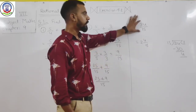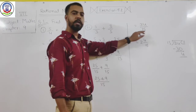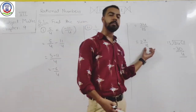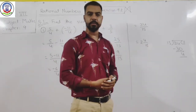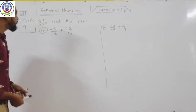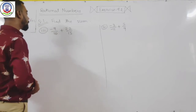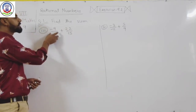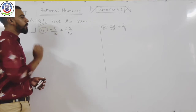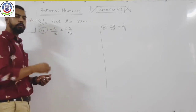34 upon 15 is also a correct answer. But whenever your numerator is larger than the denominator, you have to convert that number into a mixed fraction. Our next question is question number 3: minus 9 upon 10 plus 22 upon 15, and we have to add these two rational numbers.